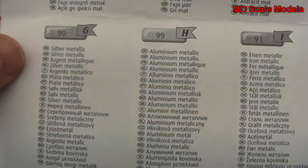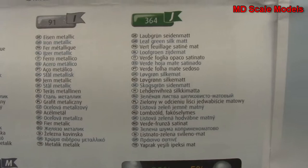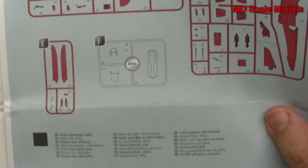So, let's see here. I'm looking for the English, and there we go, leaf green silk mat. And there's our parts listing.